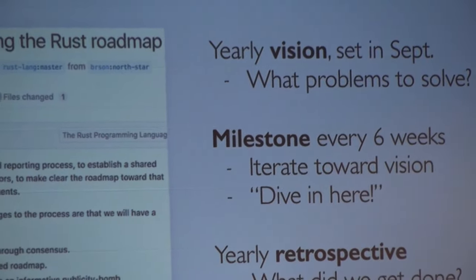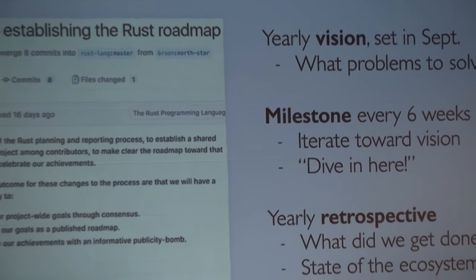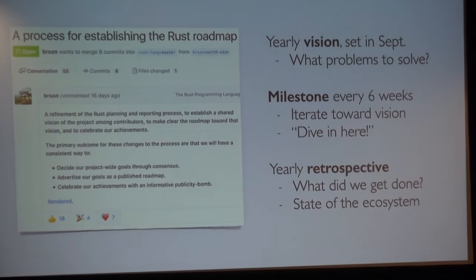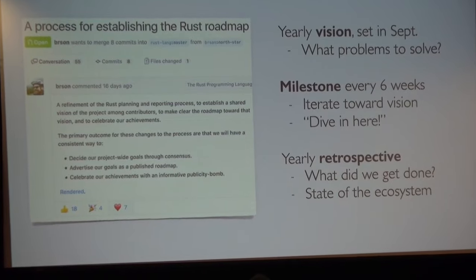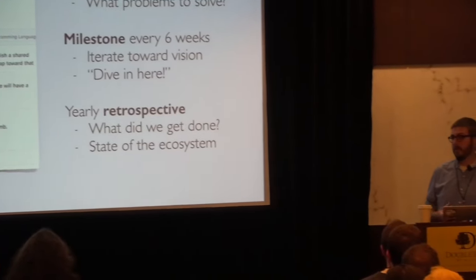The final piece, which I think is really important, is we want to tell this story to the broader world. If we as a community have a hard time following everything that's happening in Rust, the people outside this community have an even harder time. So the idea is, at the end of the year, we put together a big retrospective that says: as a community, what did we do? What was the story of Rust this year? How did it evolve? What is the state of our ecosystem? On yearly increments, the world gets to hear about Rust's evolution in a very clear way. I'm really excited about this process.